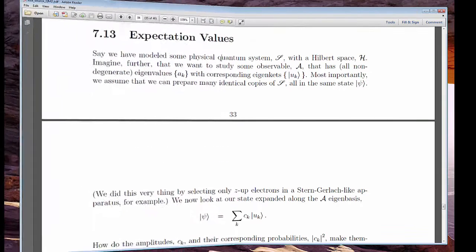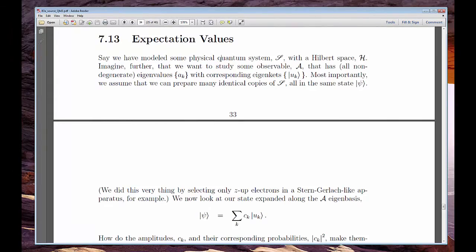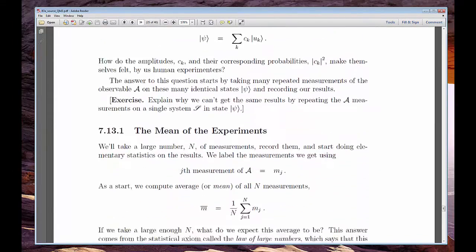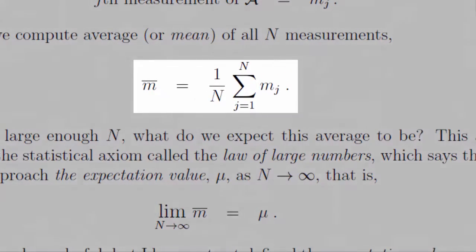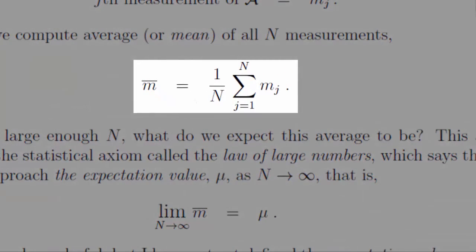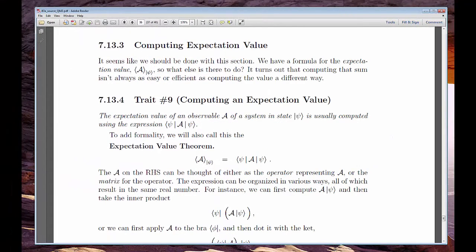The final topic today is expectation values. These are the average measurements we get if we repeat a quantum experiment over and over and keep track of the results. We'd like to be able to predict these expectation values, and the math to do so is something you already learned, but we'll review it in this chapter.